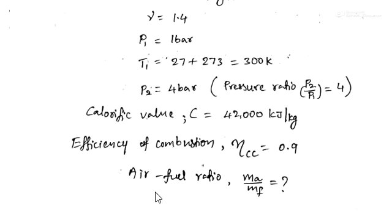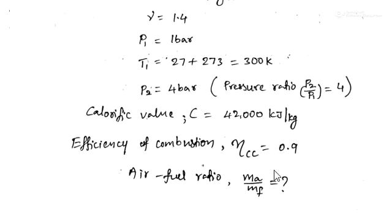The efficiency of combustion is taken as 90%, because there is a 10% loss of calorific value in the combustion chamber. So combustion efficiency eta_CC = 0.9. We have to find the air-fuel ratio: if MA is the mass of air used and MF is the mass of fuel used, we need to find MA/MF.